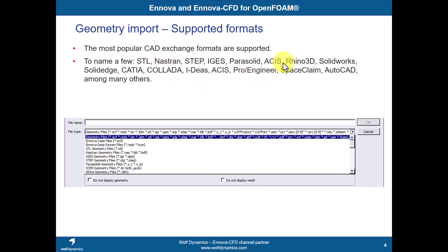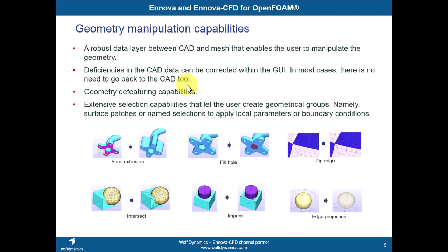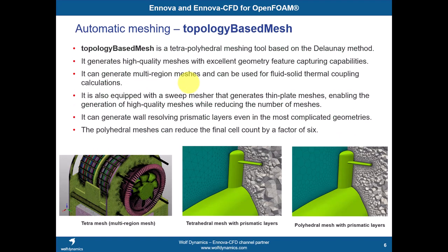Talking about geometry import — it's very robust. You have support for many formats. Most common CAD and solid modeling formats are supported: Rhino 3D, Blender, STL, STEP, IGES, SAT, Parasolid, and commercial software formats like SpaceClaim, Pro-E, Solid Edge, SolidWorks, and even CATIA. Once imported, if there's an error in the geometry it can be fixed. The most common operations are merging faces or erasing objects, since topology-based meshes follow all small features. You can merge, erase, and so on.